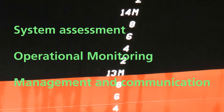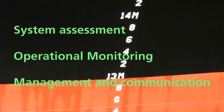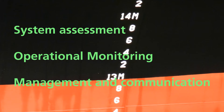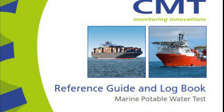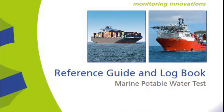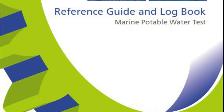Key elements of the water safety plan are: system assessment, operational monitoring, and management and communication. To do the system assessment, you will find step-by-step instructions and examples of filled-in tables in the CMT reference guide provided with the Potable Water Test Kit.